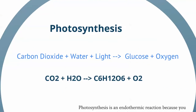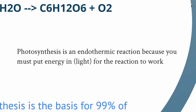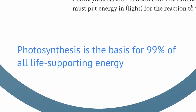In photosynthesis, plants take carbon dioxide, water, and light — that's the energy they're putting in — to yield glucose and oxygen. The equation is right here. Photosynthesis is an endothermic reaction because you put light energy in for the reaction to work. Photosynthesis is the basis for 99% of all life-supporting energy. Almost all our energy originally comes from photosynthesis, which comes from plants.